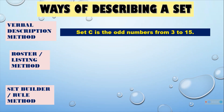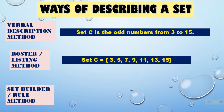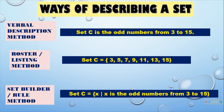If we change it into roster method, we have Set A equal to {3, 5, 7, 9, 11, 13, 15}. And if we change it into set builder or rule method, we have Set C = {X such that X is an odd number from 3 to 15}.